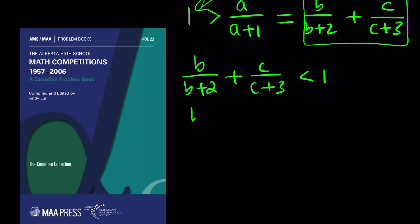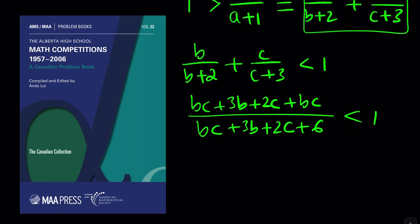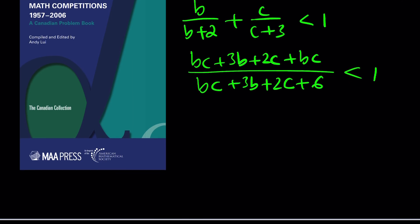When we do, it's going to look like this: bc plus three b plus two c plus bc divided by bc plus three b plus two c plus six is less than one. Now don't combine the bc's in the numerator. You know why? Because we kind of have something in common here. This expression is repeating. You add the same thing to bc and six, and you get a fraction that's less than one.